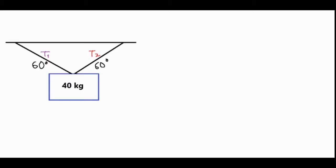The first thing we want to do is draw a force diagram analyzing our 40 kilogram mass. We have the force of tension from T2 pointing along this rope and the same from the other one pulling upward along this rope. We have the force of gravity pulling straight down.